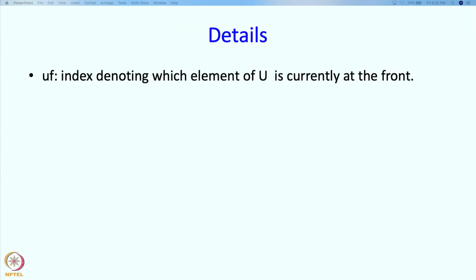So what are the details? We are going to maintain a variable UF which is going to denote the element of U, the index at which the front is currently. What that means is that elements 0 through UF-1 have already moved out and therefore the front has now advanced to index UF. Similarly, there is VF.